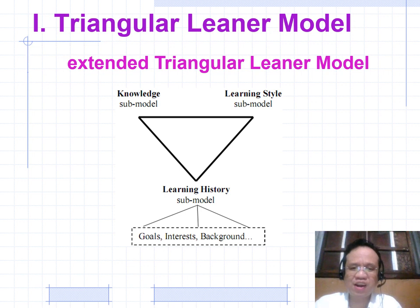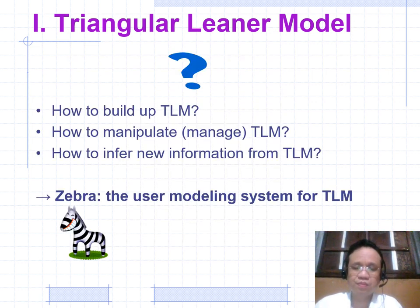This is the Triangular Learner Model. The Learning History Submodel includes goals, interests, and backgrounds.